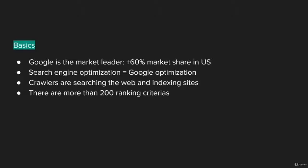Search engines use computer programs called crawlers to search the web. The crawler is indexing the sites it finds and ranking them according to relevance for keywords and for popularity. Unofficially, Google is using more than 200 ranking factors for ranking the sites. Which factors really play a role is a secret well kept by Google. What we know is that ranking factors can change — updates are actually pretty common.